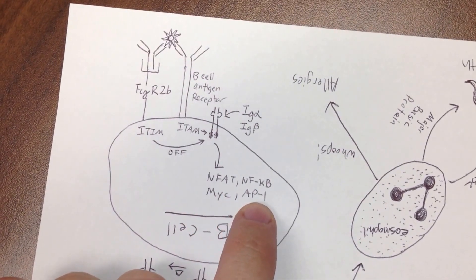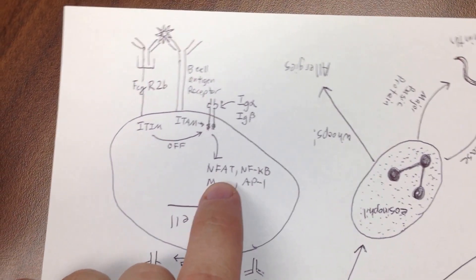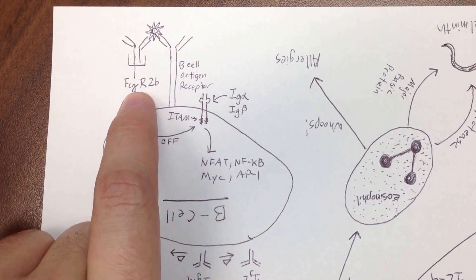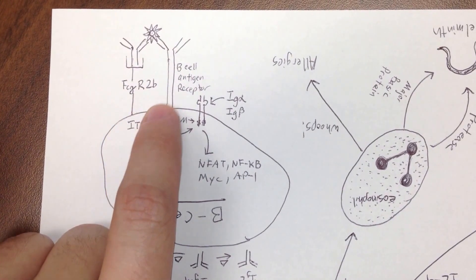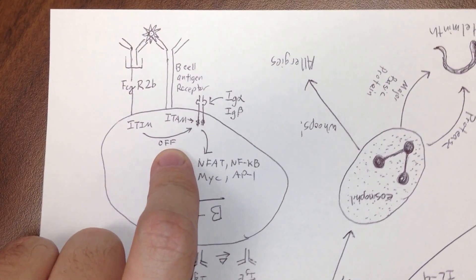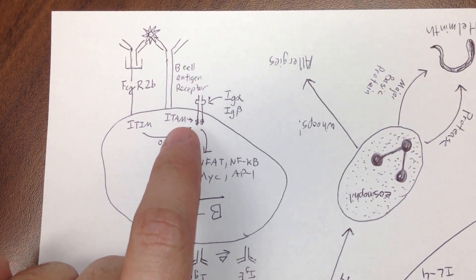But if this receptor is bound, Fc gamma R2B, then ITIM will actually tell ITAM to turn off. So TIM goes and tells TAM to turn off.